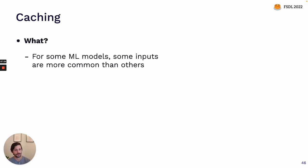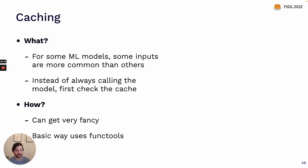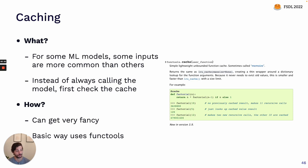Next, we'll talk about caching. For some machine learning models, if you look at the patterns of inputs users are requesting predictions on, there are some inputs that are much more common than others. So rather than asking the model to make those predictions from scratch every time, let's store the common requests in a cache and check that cache before running the expensive forward pass on our neural network. There's a huge depth of techniques for intelligent caching, but there's also a very basic way using the functools library in Python — adding a wrapper to your model.predict code that checks the cache and returns the cached prediction if it's there. This is also one of the key techniques in the Roblox blog post for scaling to a billion requests per day.